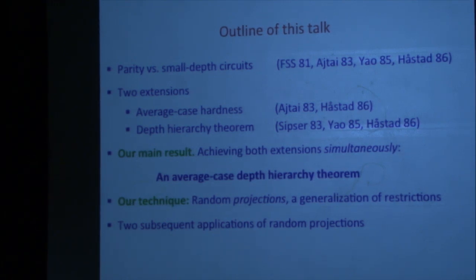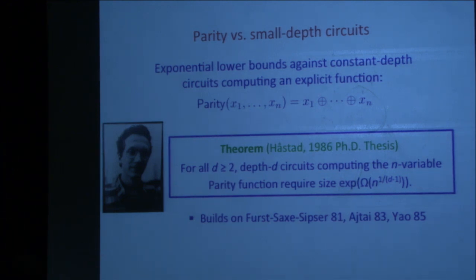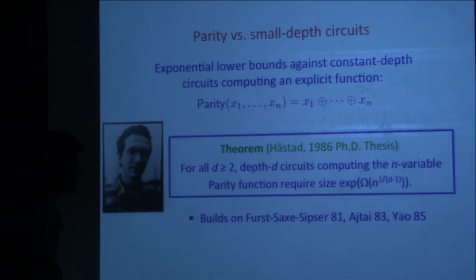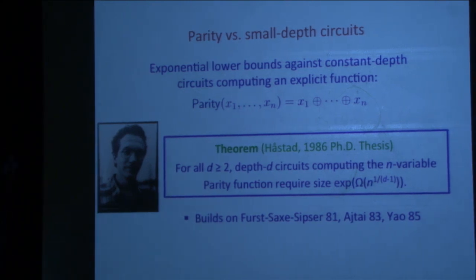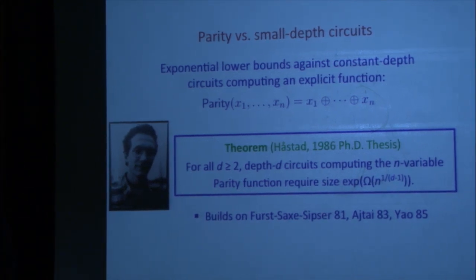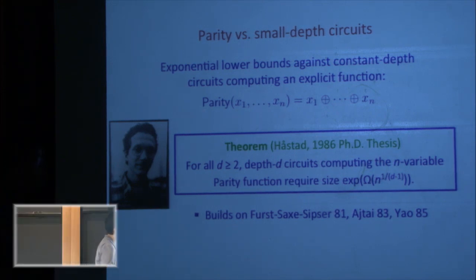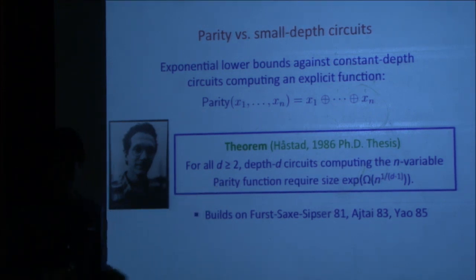Let's recall parity versus small depth circuits. We have exponential lower bounds against constant depth circuits computing the very explicit function parity of x1 to xn. Building on a long line of work, Hastad showed in his thesis that for every depth d greater than 2, depth-d circuits computing the n-variable parity function require size at least 2 to the n to the 1 over (d minus 1). So if you allow me a depth-100 circuit to compute parity, I need size 2 to the n to the 0.99 — a very strong lower bound against a very explicit function.